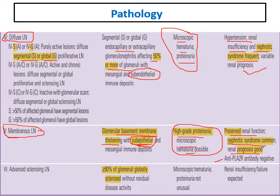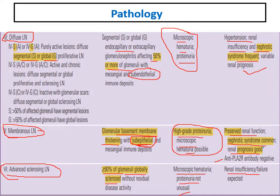In class 5, anti-PLA2R is negative because it is secondary membranous nephropathy. Class 6 is the advanced sclerosing stage: more than 90 percent of glomeruli are globally sclerosed — the end-stage class. Presentation includes some microscopic hematuria, proteinuria at a lower level, and mainly deterioration of kidney function with decreased GFR for more than three months.